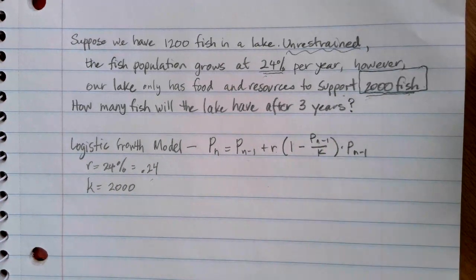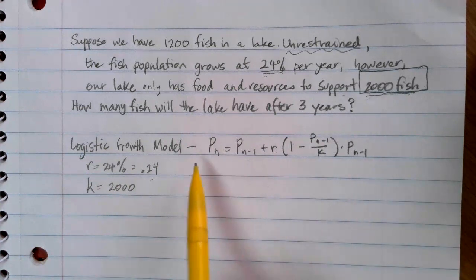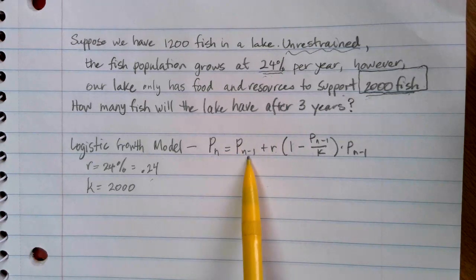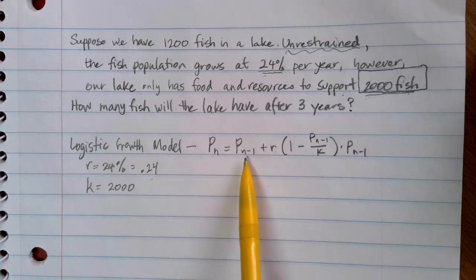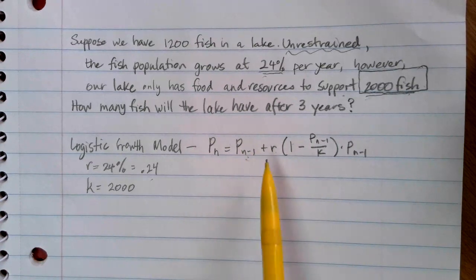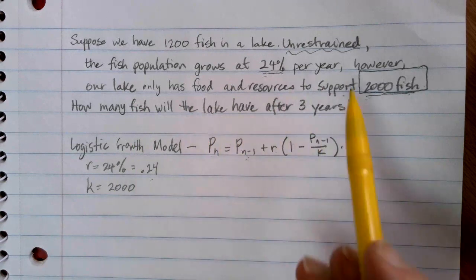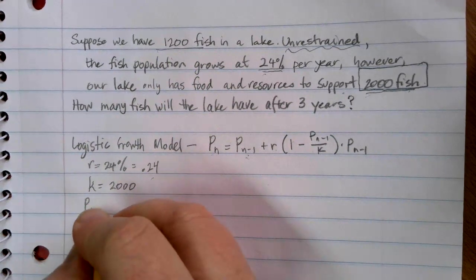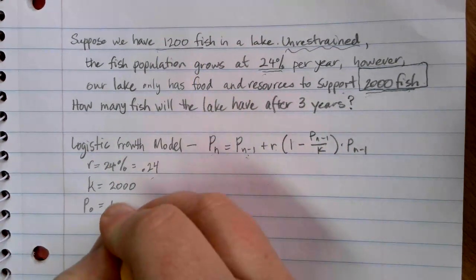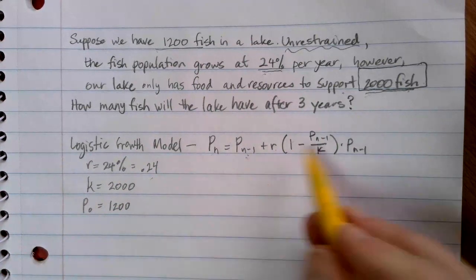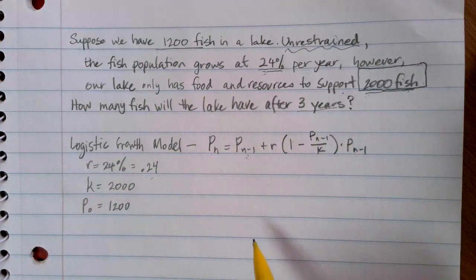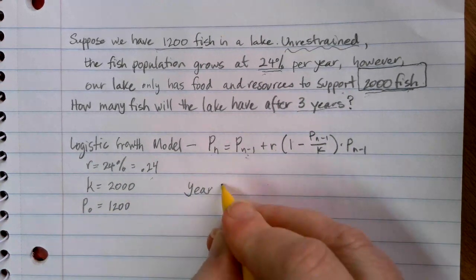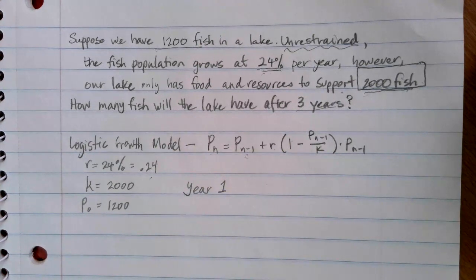Now, everywhere else, all we see is P_(n-1). That means that if I want to find the population after three years, I need to use the population after two years. I need to use the population the year before. Well, I don't know the population in two years. What I do know is I know what I have as a starting population right now. So technically what this is, is it's our P_0. It's a starting value, and we have 1,200 fish. So I can't jump right in and answer the question about how many fish the lake is going to have after three years. First, I'm going to have to use the information I know to figure out how many fish there are in the lake after one year.